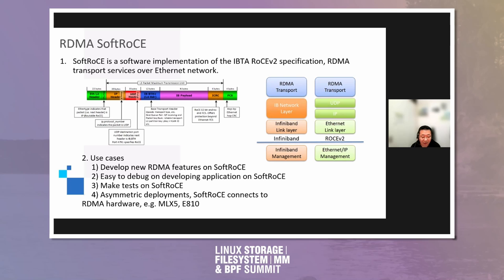The right side shows the cooperation between InfiniBand and RoCE version 2. The InfiniBand stack includes the IB network layer, IB link layer, and IB management. RoCE version 2 runs in UDP payload and works in the TCP/IP stack. For our use case, we use SoftRoCE to develop and test new RDMA features. It is easy to debug and develop applications on SoftRoCE. We can also use SoftRoCE for NIC testing — it is used very widely in public and private data centers. We can use SoftRoCE to connect to a Mellanox NIC or Intel E810 to check whether packages are correct.